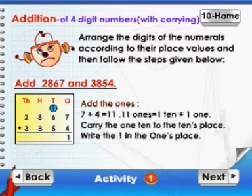Add the ones. 7 plus 4 is equal to 11. 11 ones is equal to 1 ten plus 1 one. Carry the 1 ten to the tens place. Write the 1 in the ones place.